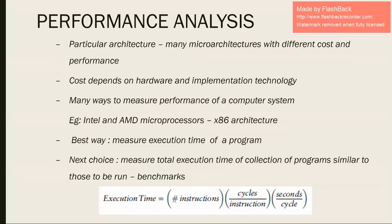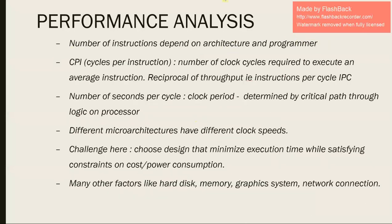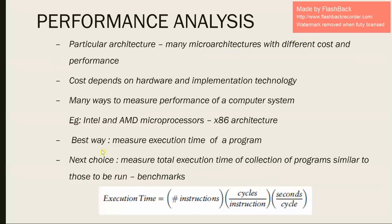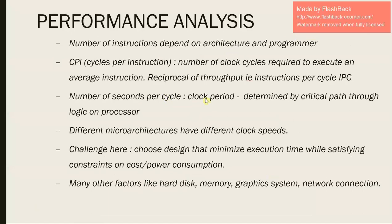The second factor is cycles per instruction (CPI), which stands for the number of clock cycles required to execute an average instruction. It can be given as the reciprocal of throughput, where throughput is instructions executed per cycle. The third factor is seconds per cycle, which is your clock period. It is determined by the critical path through logic on the processor — that is, the time taken to process data through the data processing path in the processor's logic.